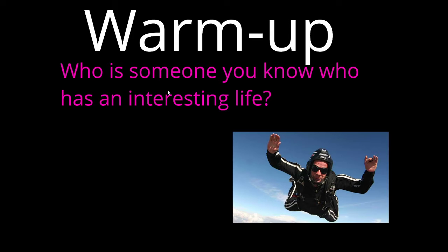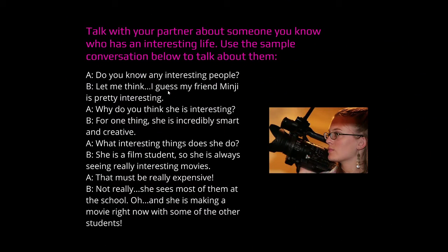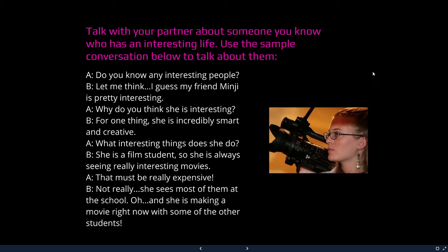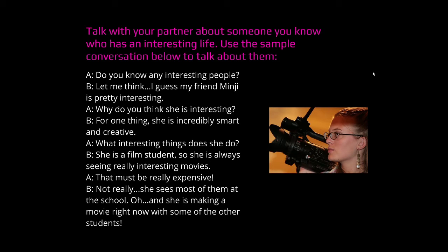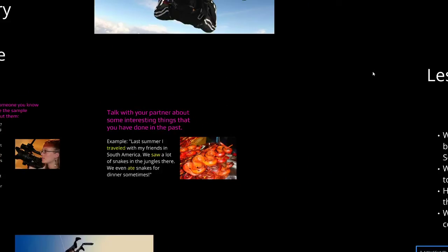So if you see something colored pink — for example, 'who is someone you know who has an interesting life?' — I would like you to discuss that in your KakaoTalk Voice Chats with your partner. Everywhere you see pink in the presentation, this is something you can go through together and discuss with your partner. Talk with your partner about some interesting things you've done in the past, using simple past verbs to talk about things you did last summer, last year, or when you went on vacation — verbs like traveled, saw, things that you ate or did.